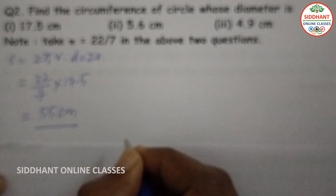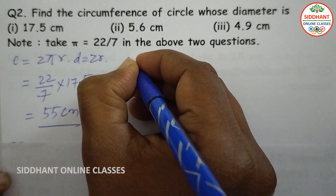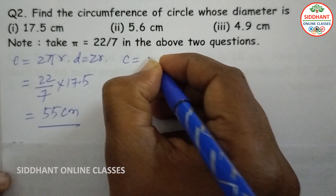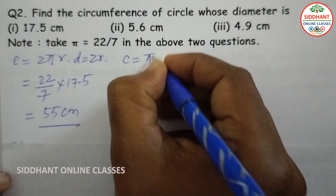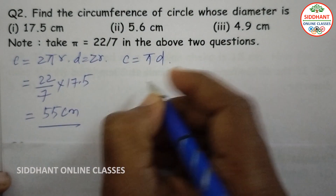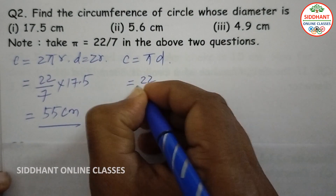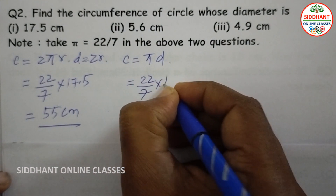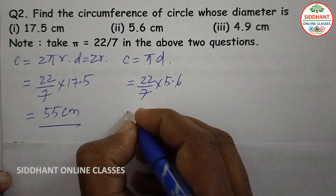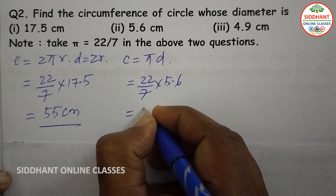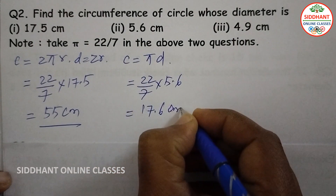Same here, circumference equals 2 pi r and d equals 2r, then that will be pi d. Taking pi as 22/7 and diameter as 5.6, here 5.6 divided by 7 gives 0.8, so when you multiply we get 17.6 centimeters.